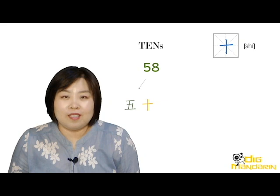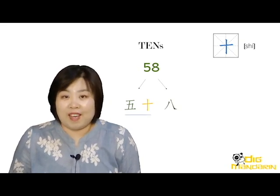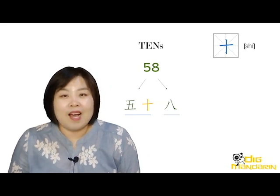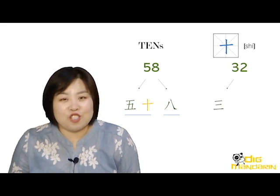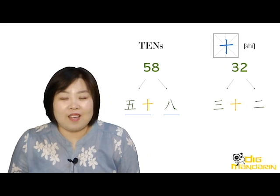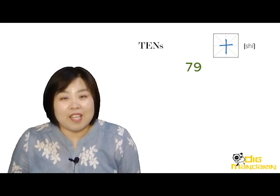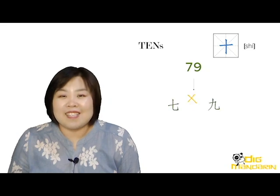Let's say some numbers in Chinese. When it comes to tens, we need to add shí after the number. For example, 58 — we add shí after wǔ and then plus bā, so 58 is wǔshí bā. Our next number is 32 — we add shí after sān and then plus èr, so 32 is sānshíèr. Our last number is 79 — can you say it? Yes, it's qīshíjiǔ. Well done!